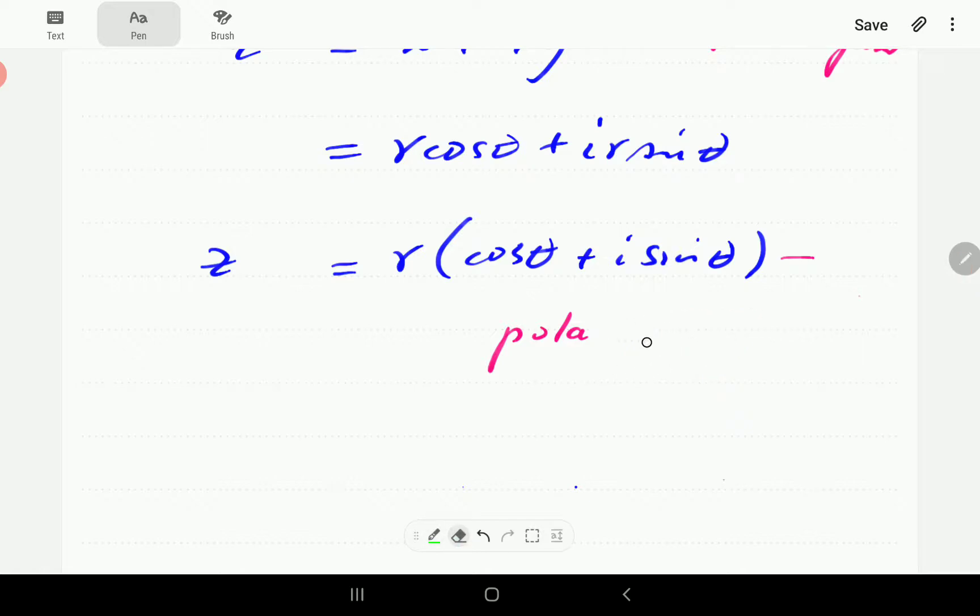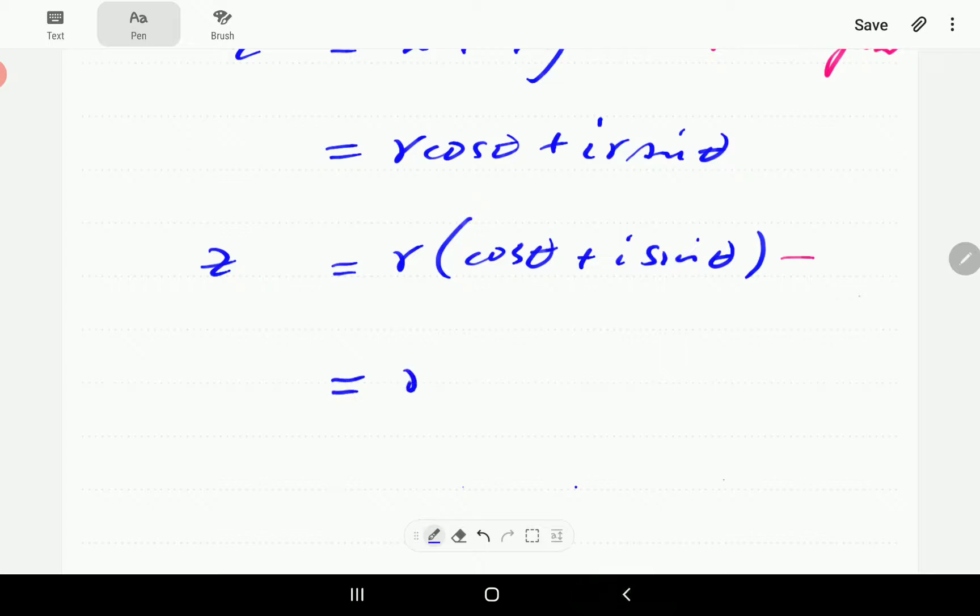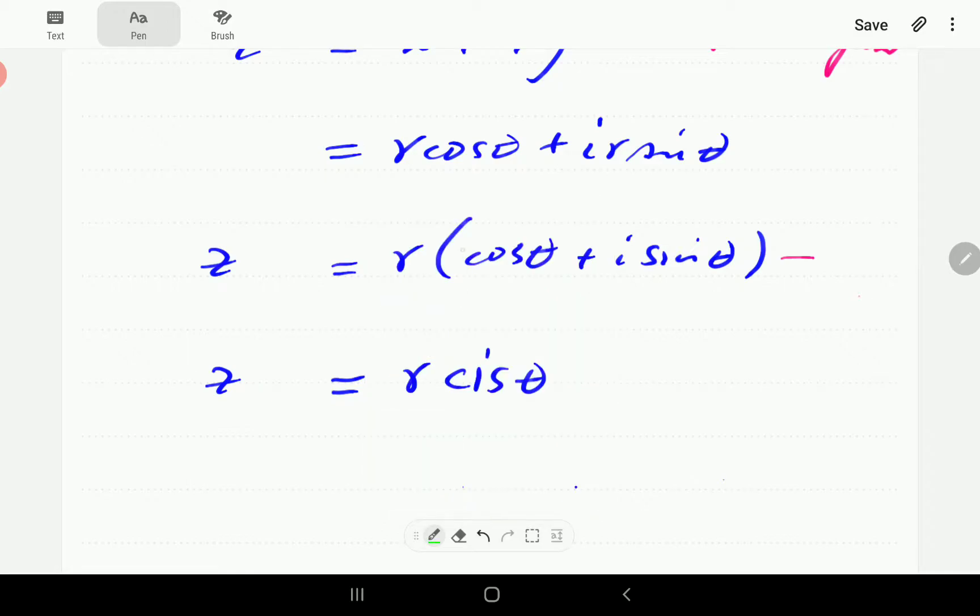Now the polar form, we can write it in a shortened version as follows. So we can write this as r cis theta. Where the c is from the cosine here. The i is just the unit imaginary number. But s is the first letter of the word sine. So this is the abridged version. So r cis theta is r cosine theta plus i sine theta. And so that is your polar form.